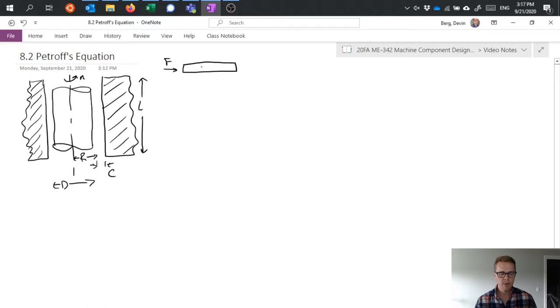It has some area which is the bottom surface here and it's therefore then moving forward with a velocity U and it's got a layer of fluid between it and a fixed surface.